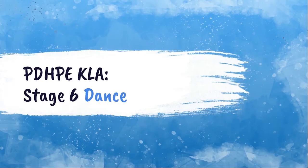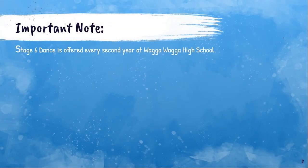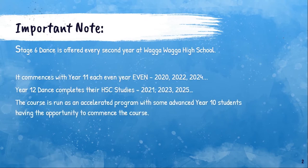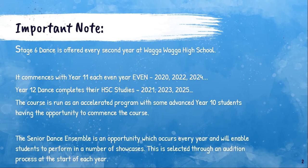Hello and welcome to Stage 6 Dance. My name is Catherine Fisher and together with Melissa Brown we will take you through the details of the course. Stage 6 Dance is offered every second year at Wagga Wagga High School. The course is run as an accelerated program, with some advanced Year 10 students having the opportunity to commence the course. Wagga Wagga High School is fortunate enough to offer a number of extracurricular dance programs, one of which includes the Senior Dance Ensemble.